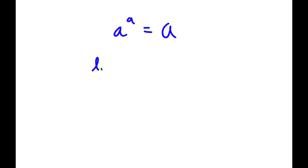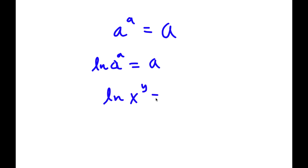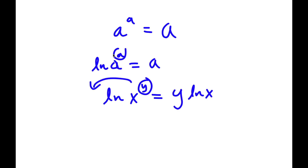Now I have ln of a to the power of a is equal to a. If I have something in the form ln x to the power of y, I can move this exponent y to the front, so this equals y times ln x. In this case, I can move a to the front, so this is going to equal a times ln a.